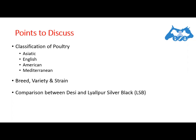Let's start with the classification of poultry. There is a group of standard breeds which have been developed in a certain region or geographical area. Based on these geographical regions, there are four classes: Asiatic, English, American, and Mediterranean. Let's discuss the characteristics of each.